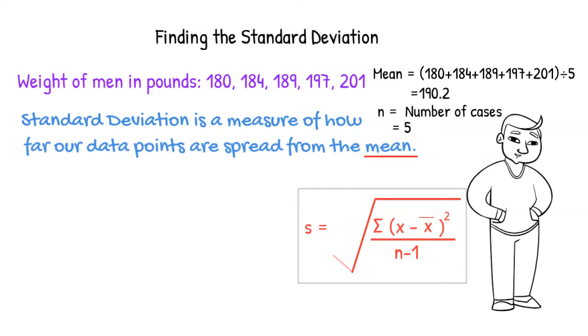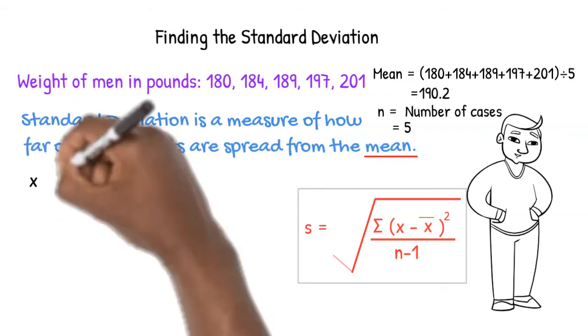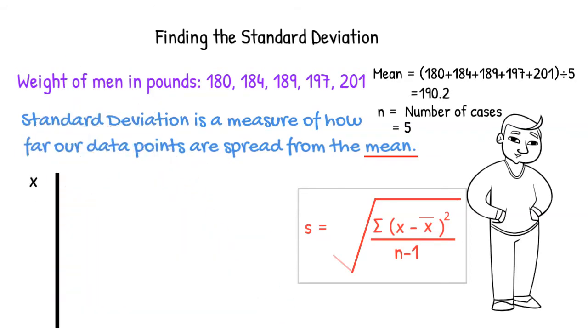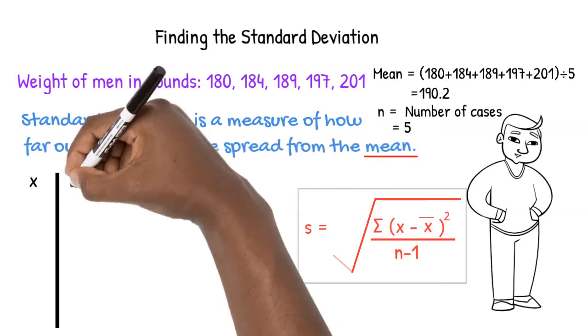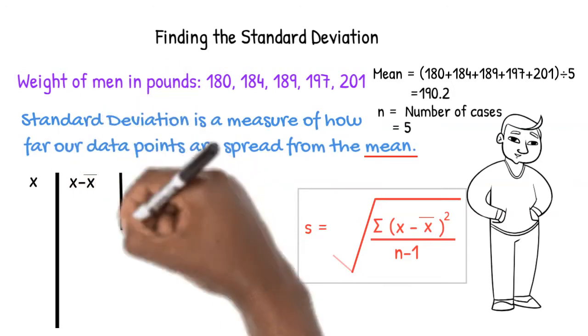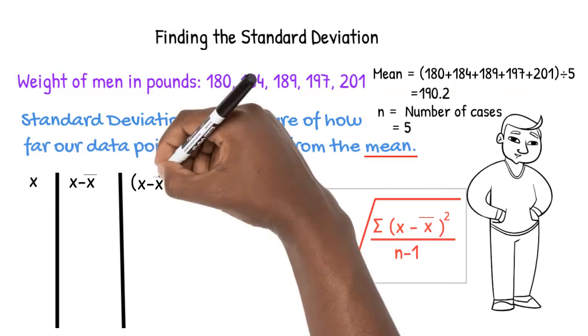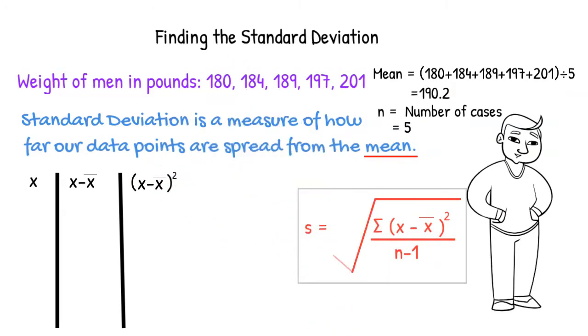For formulas with repeat calculations, tables help us to stay organized. We will need to list all our weights in the first column. These are our X values. We will need to subtract the mean from each of these weights, and we will need to square each of those differences.